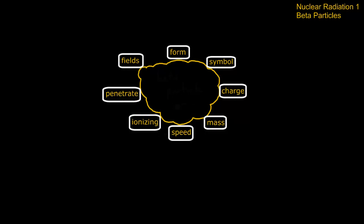Let's take a look at another form of nuclear radiation: beta particles. Once again, you need to know eight facts about this. We first look at the form of a beta particle, and this comes actually from the breakup of a neutron.